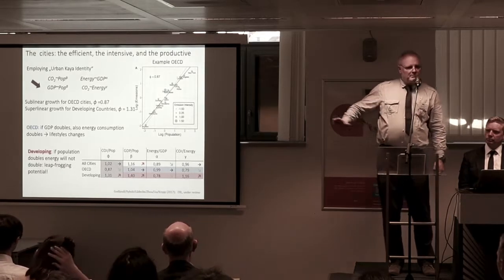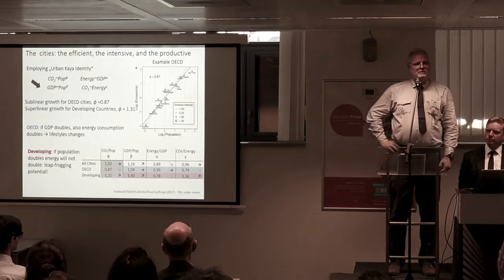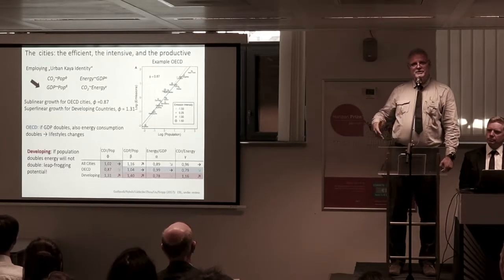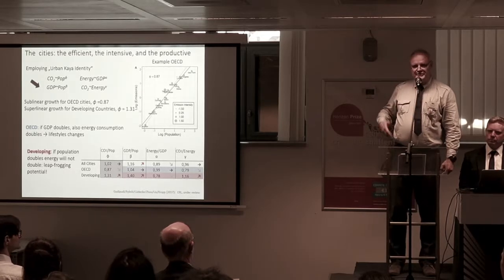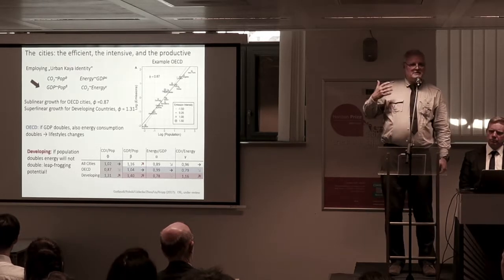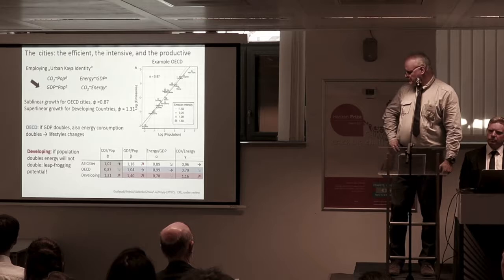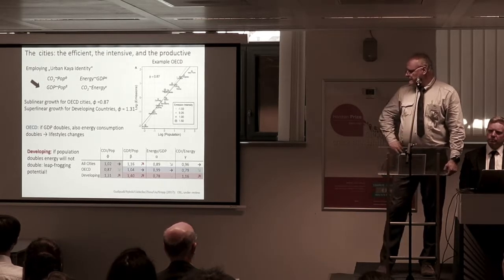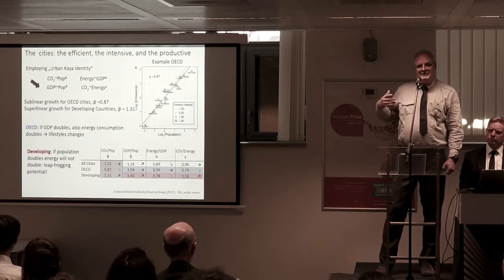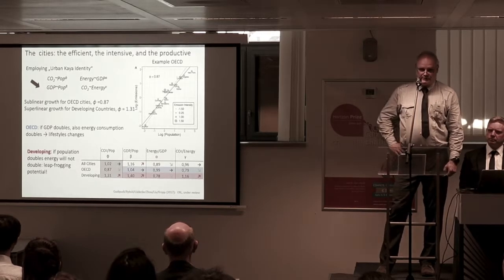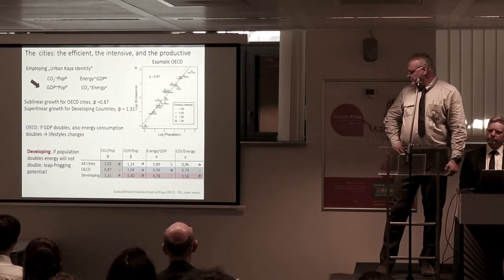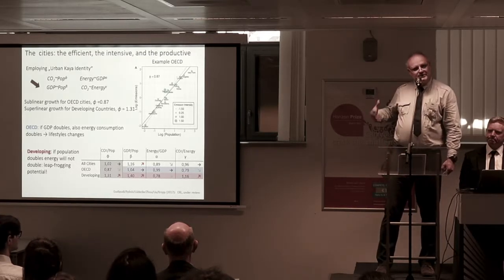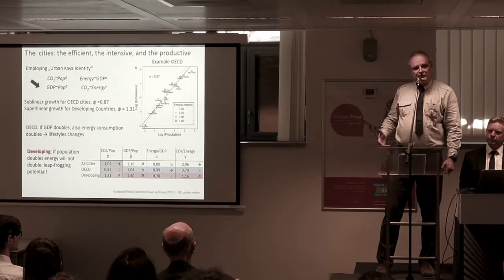In terms of GDP per population we have also approximately one, meaning if the population is increasing, emissions are increasing in parallel — though we can of course improve here. Looking at the developing world, we see that CO2 is increasing while energy per GDP is going down. That means in developing world cities we still have a strong potential for leapfrogging.